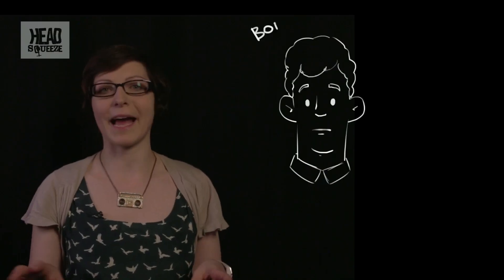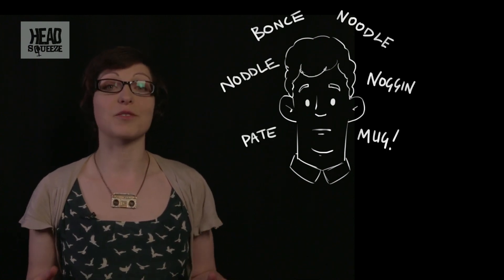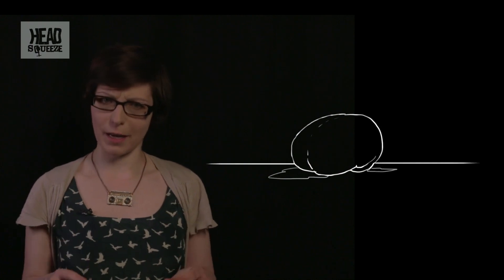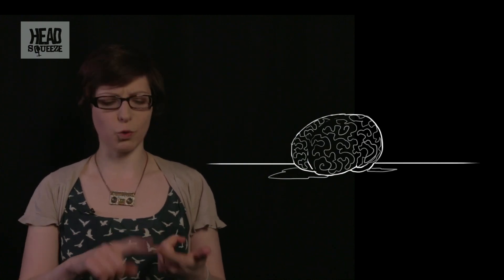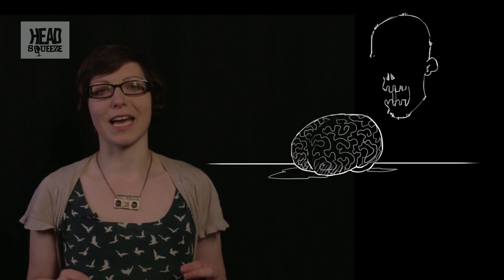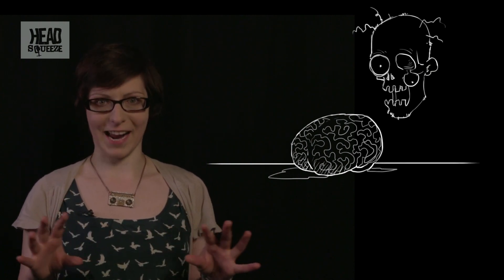Bonts, noodle, noggin, pate, mug. We've got plenty of words for that five kilogram mass balanced on top of our neck, but not so many for the mix of protein, water and fat inside. On NumberHub today, we're talking about brains.